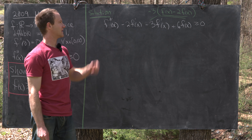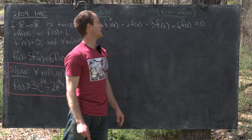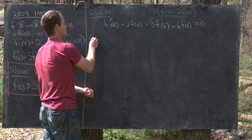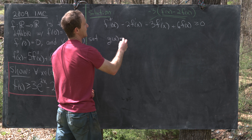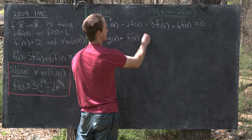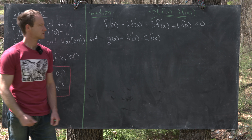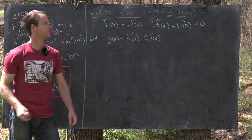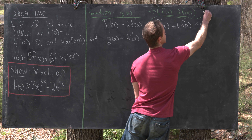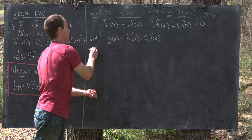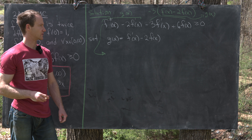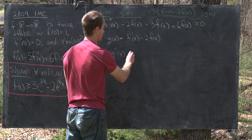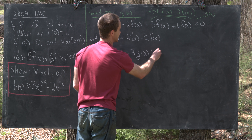Let's introduce g(x) = f'(x) − 2f(x). Then f''(x) − 2f'(x) is g'(x), so our inequality becomes g'(x) − 3g(x) ≥ 0 — a first-order differential inequality. The initial condition follows immediately: g(0) = f'(0) − 2f(0) = 0 − 2(1) = −2.